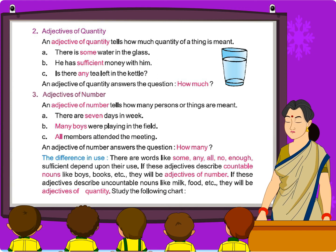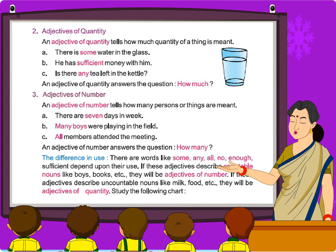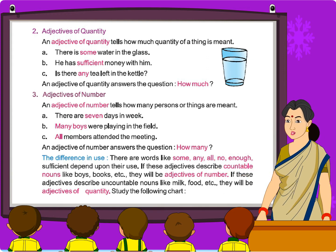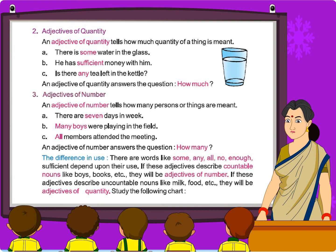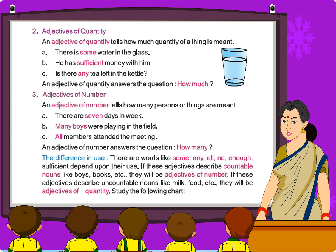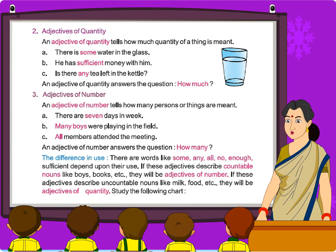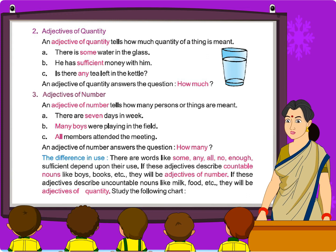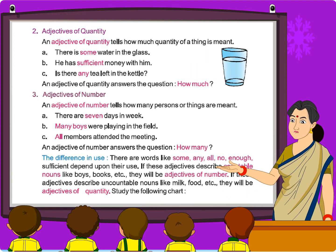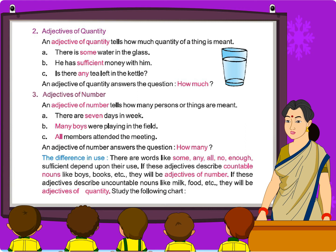Adjectives of number. An adjective of number tells how many persons or things are meant. For example: 'There are seven days in a week.' 'Many boys were playing in the field.' 'All members attended the meeting.' An adjective of number answers the question: How many?